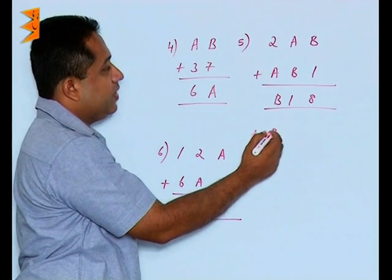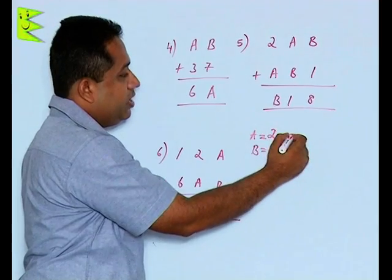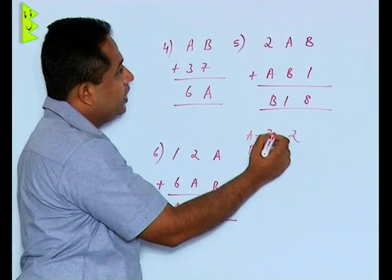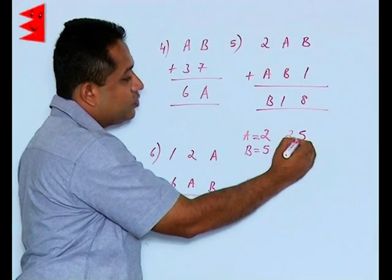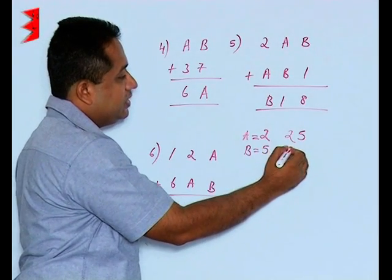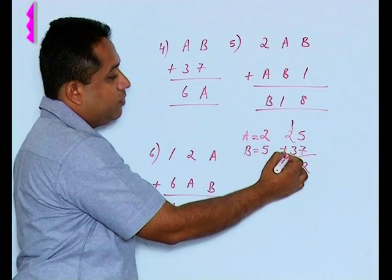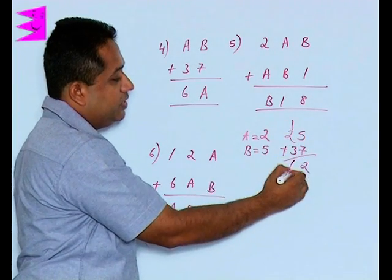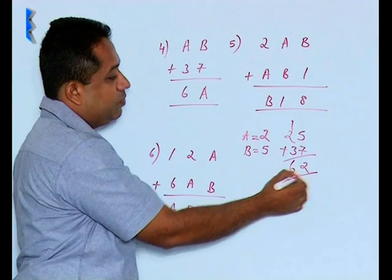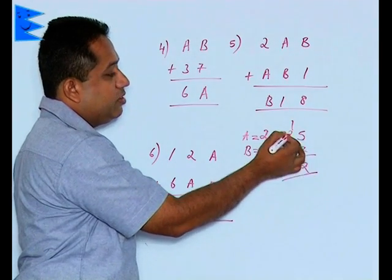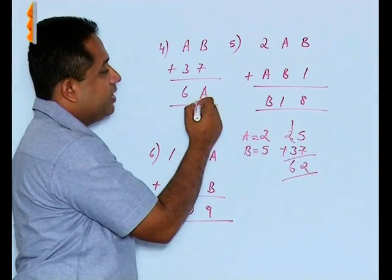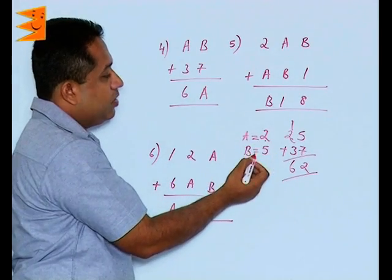Now by substituting, let us verify whether it is coming or not. So A is 2. So this is 2 here and the value of B is 5. So 25 plus 37. 7 and 5 is 12. So 2, 1 carried over. 3 plus 2 is 5. 5 plus 1 is 6. So we find that the number is 62. This value and this value both are same. So we can say that the value of A is 2 and B is 5 is correct.